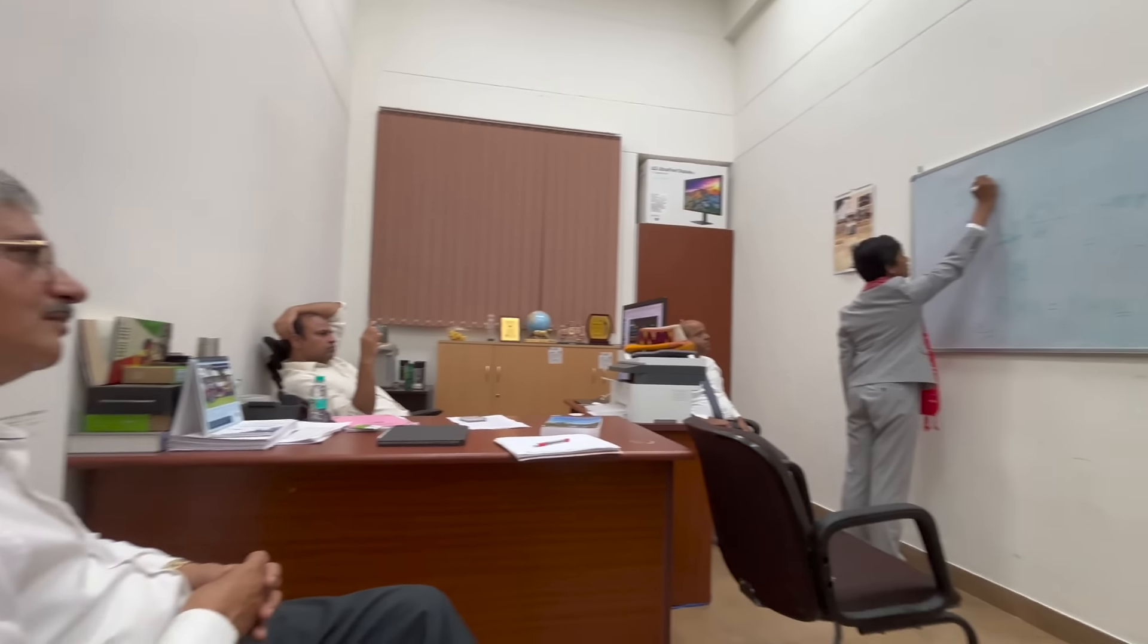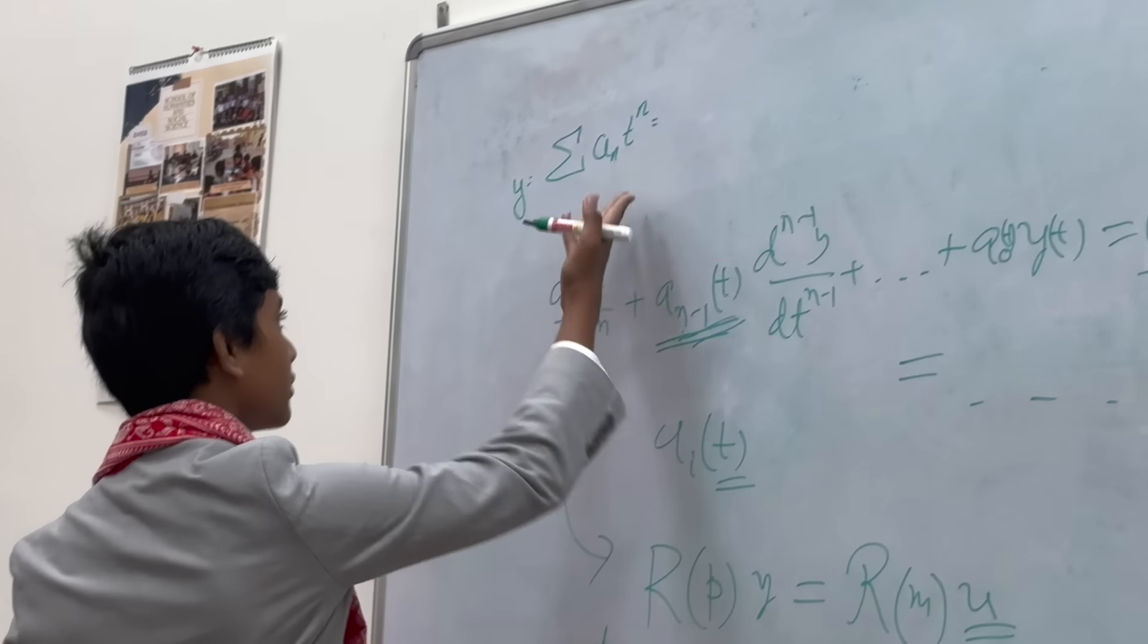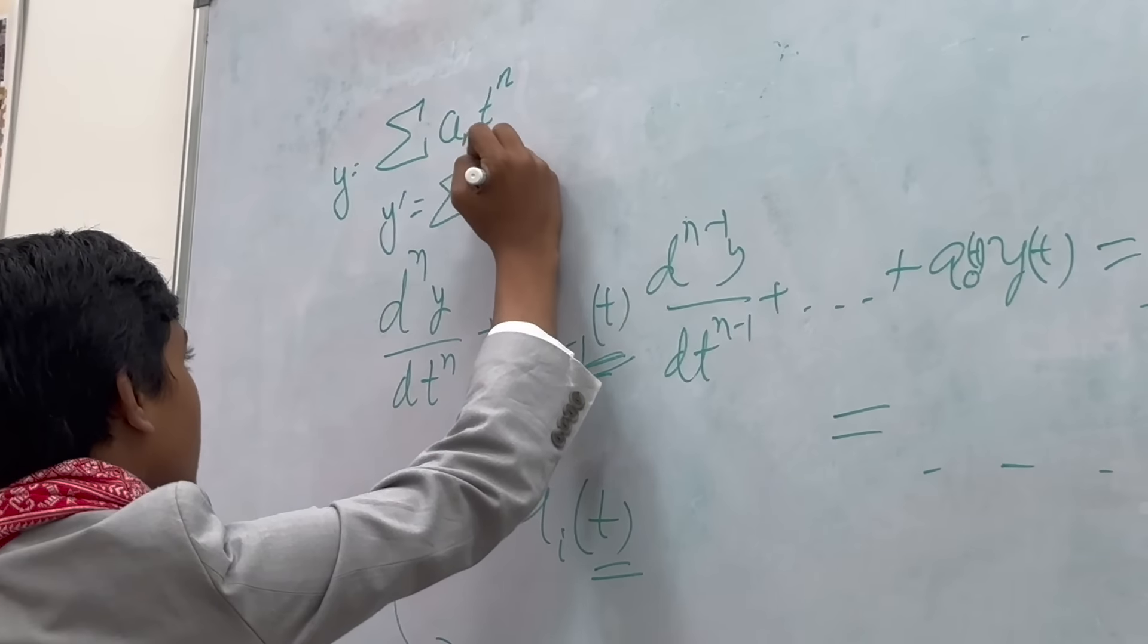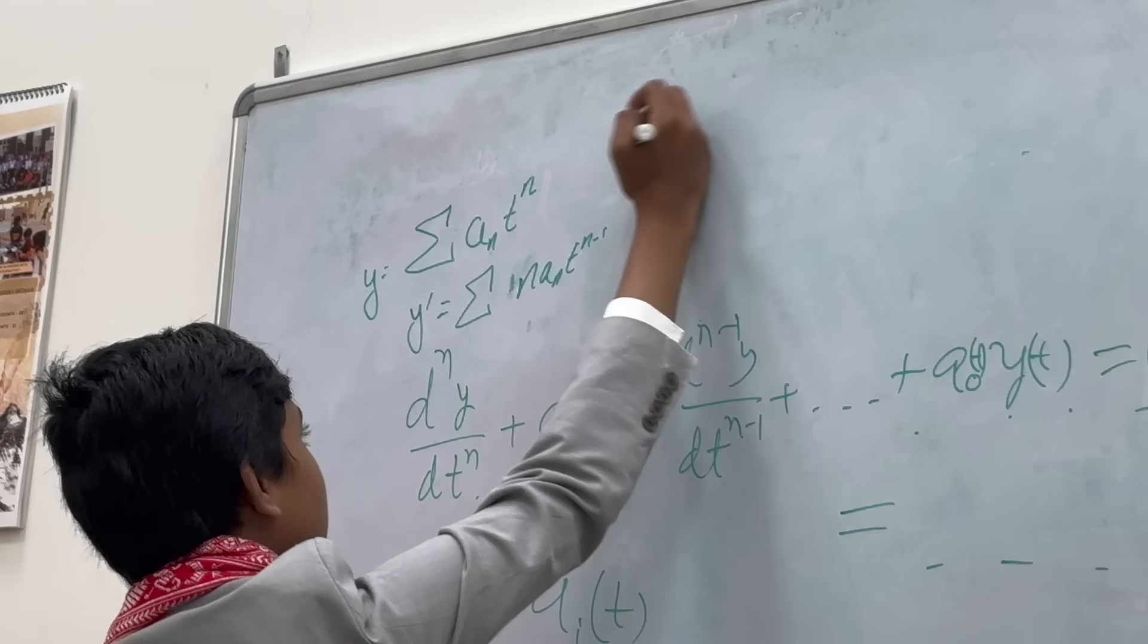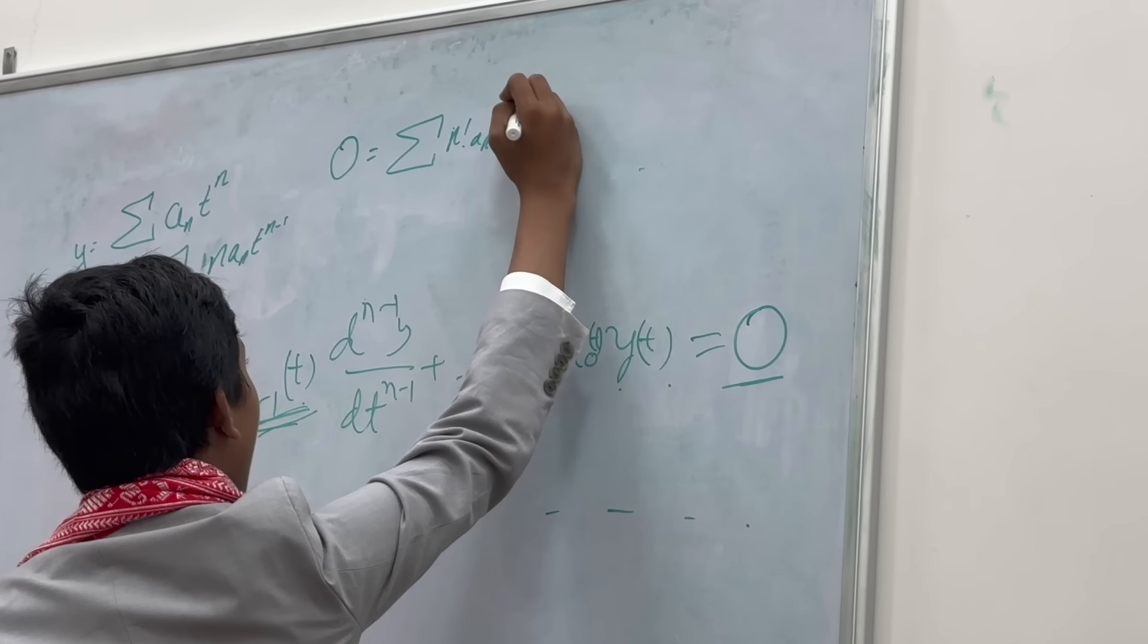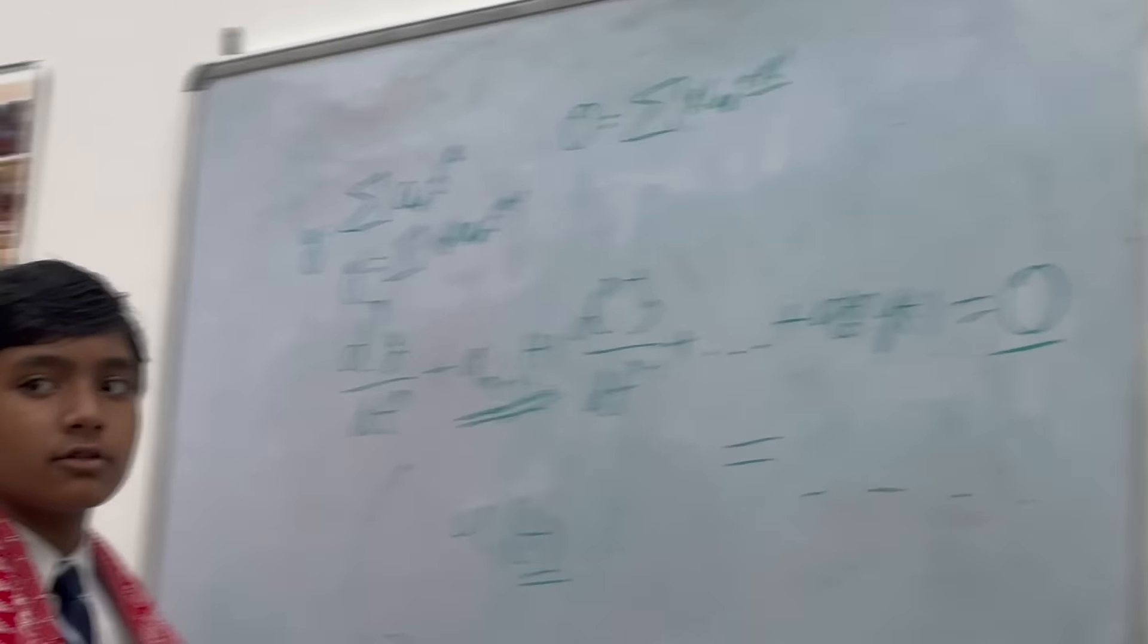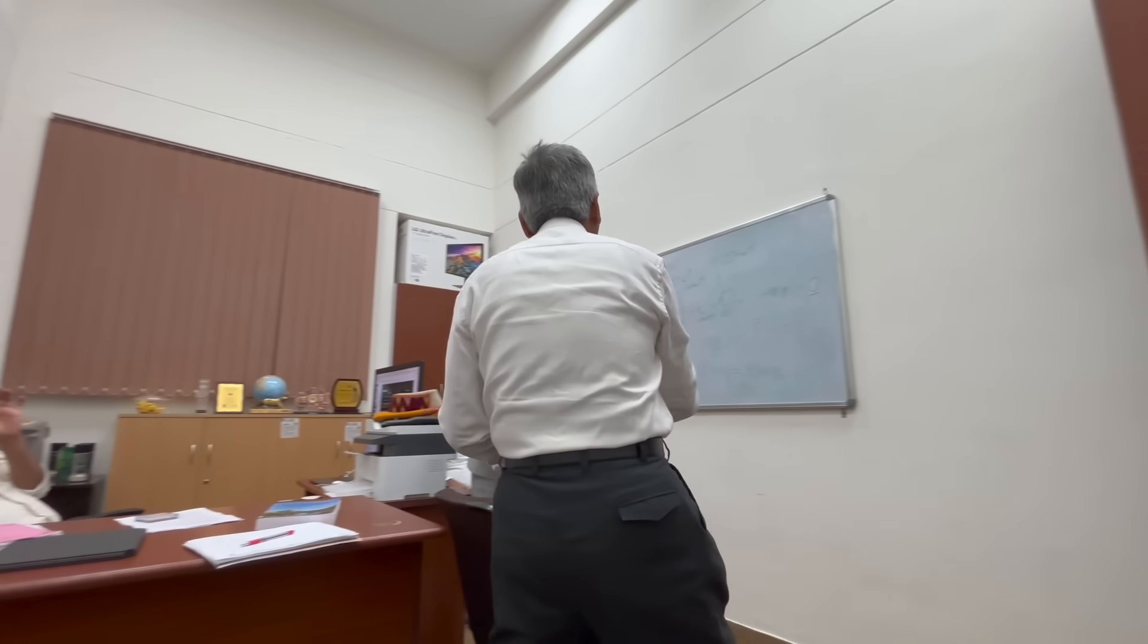So essentially, the situation is, instead of taking the Laplace transform, we assume the function to be a Taylor series. A_n(t) to be a Taylor series. What I will do is, 0 is equal to the sum of, I think this would be n factorial, times...